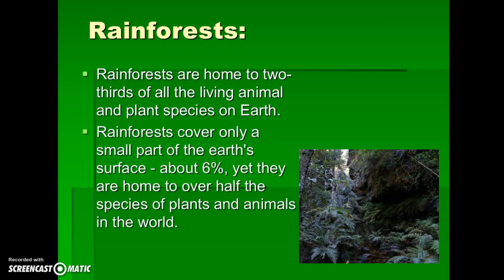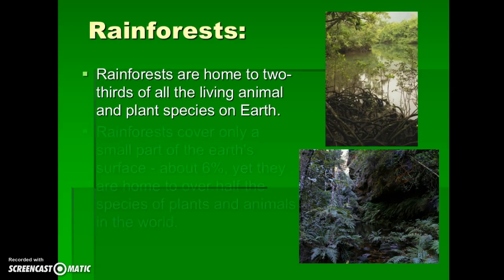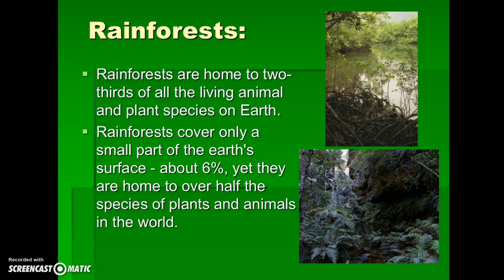Rainforests have experienced significant deforestation. As seen in satellite images of production efficiency, rainforests are very important to the entire health of Earth's ecosystem. They are home to two-thirds of all living animal and plant species on Earth, have the greatest biodiversity, and even though they only cover a small part of Earth's surface, they are home to over half the species of plants and animals on Earth. When deforestation occurs in rainforests, we are really threatening the biodiversity of the entire planet.